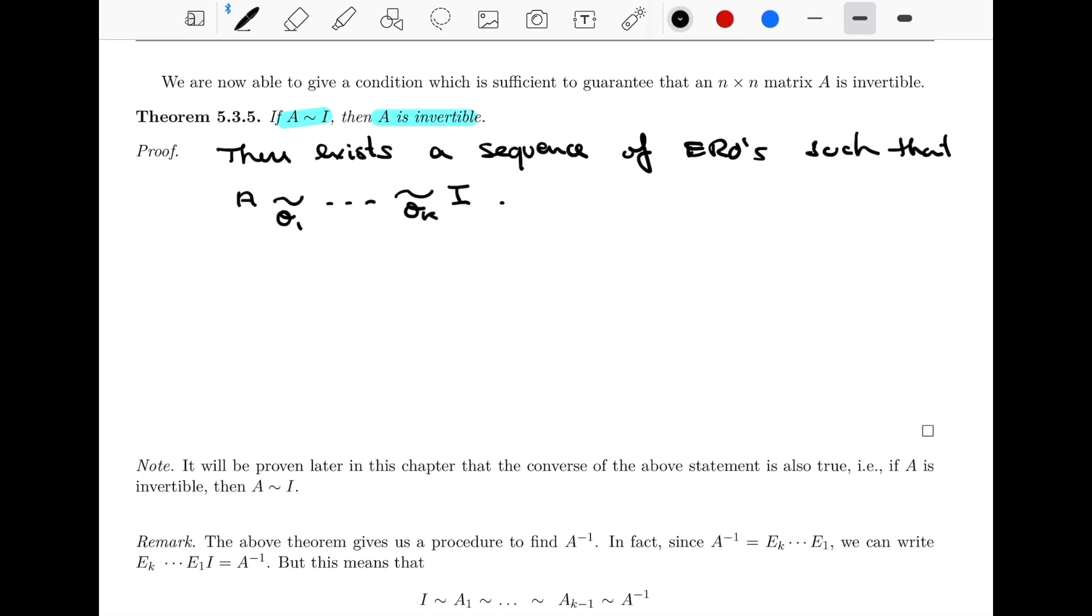And we've also seen that that means there's a sequence of elementary matrices, a sequence of elementary matrices that correspond to those elementary rho operations. And the way we look at it is E1, left multiply E1 by A, that'll give us the next matrix, and so forth, until EK, and that gives us I, right?